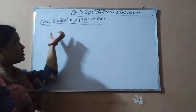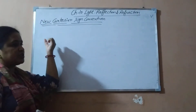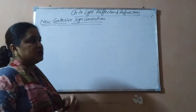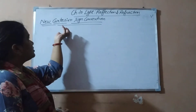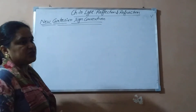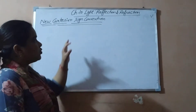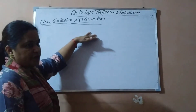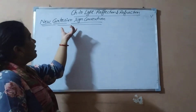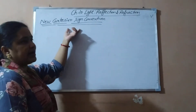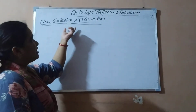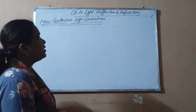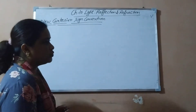So what are New Cartesian Sign Conventions? Whenever we want to solve the mirror formula, we have to put some sign conventions. To solve numericals related to mirror formula, we have to put these rules. What are these rules?